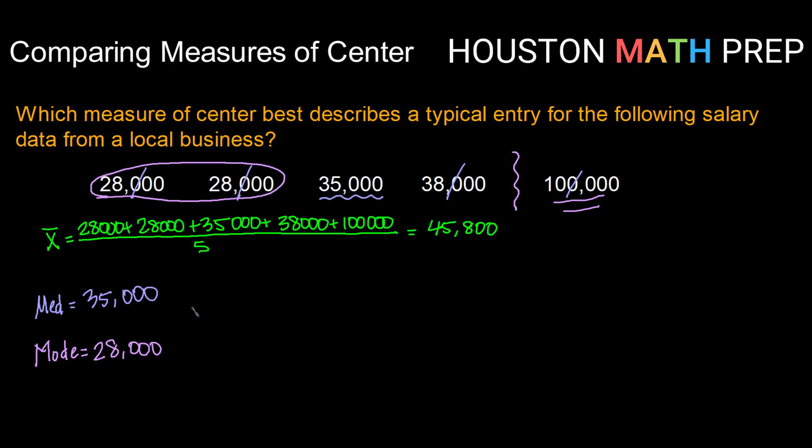If we consider instead the median, in this case the center value of $35,000, that seems like a much better average or a much better measure of a typical entry. Our lowest entry is only just a few thousand, in this case 7,000 below, and our next entry after that is only 3,000 away. So 35,000 seems like a much better measure of center.